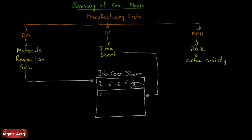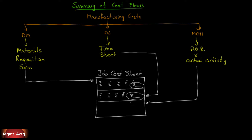Because the time sheet will have the job number, the database will show how many hours were worked on this job — all recorded here with a total for direct labor. Then we have our manufacturing overhead rate, which is multiplied by, say, labor hours. We know how many hours there are, so we just multiply it out and get a total for manufacturing overhead.